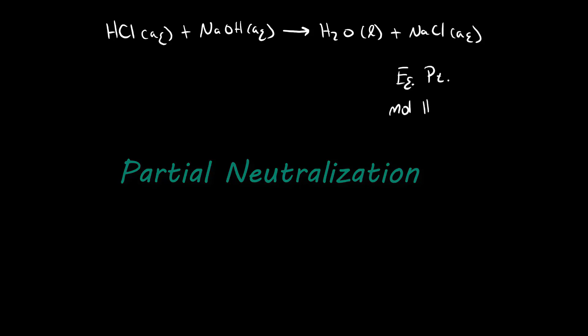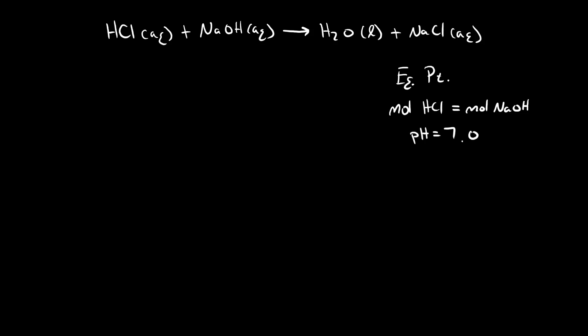So in this example moles of hydrochloric acid are equal to moles of sodium hydroxide. And when you titrate, when you neutralize a strong acid with a strong base, at this point the pH is always equal to 7.0 and that's because the products of this reaction are water and sodium chloride.